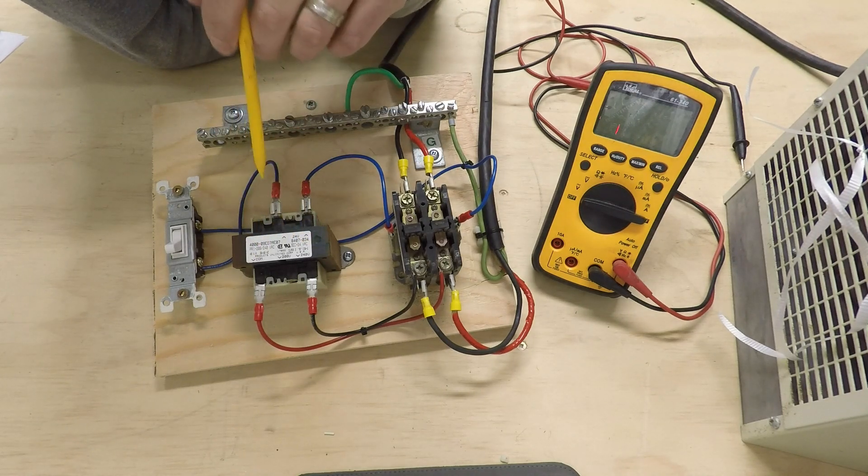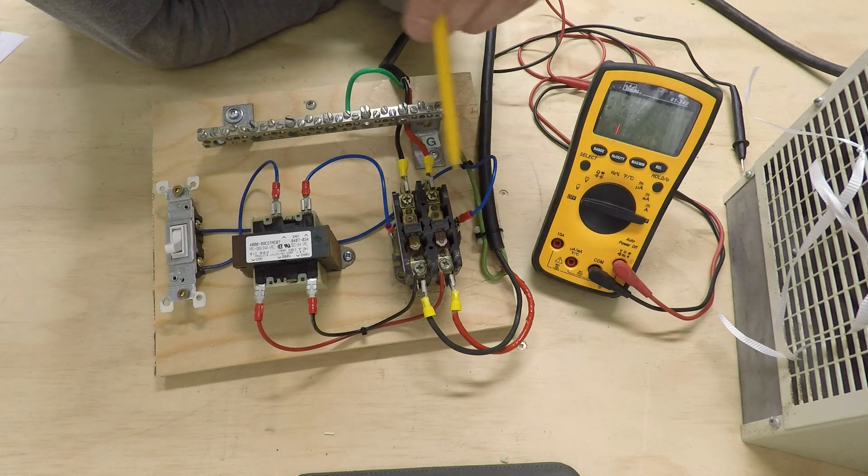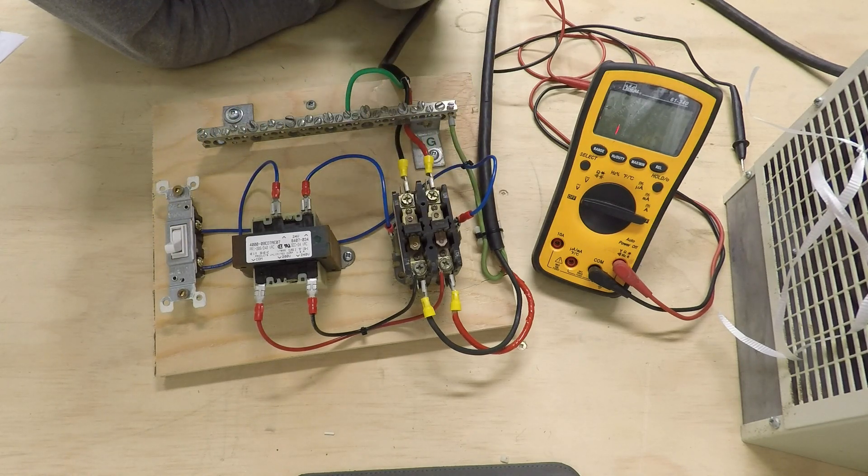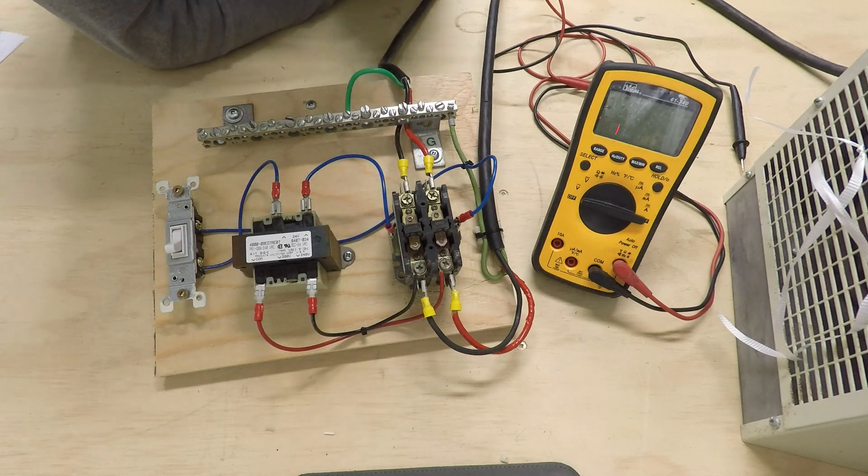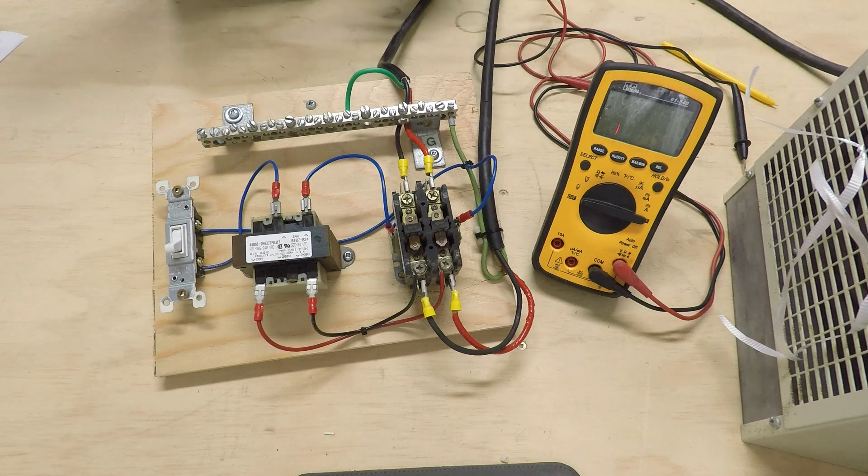Then I've also got a 240 volt to 24 volt transformer that I'm controlling the output of to switch the contactor on and off just to kind of simulate it. So what I'm going to do is turn the breaker on now. First, I'm going to take my jewelry off my hand.